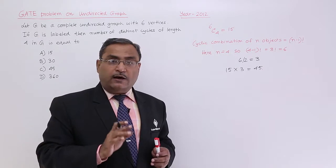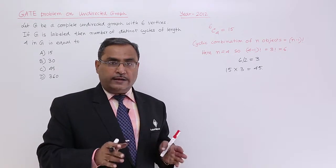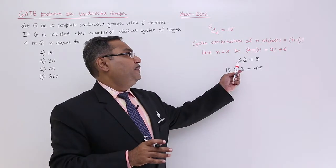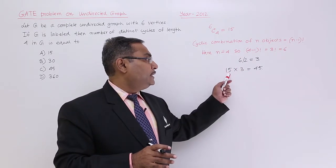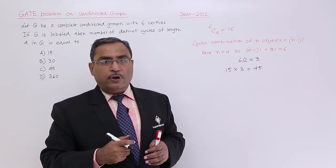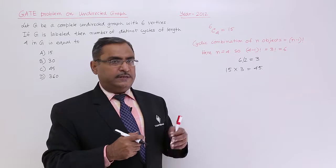But you see here the graph is not directed graph, it is undirected graph, so its ordering is not important. That is why you will be getting 6 by 2 equals 3, and now we will be having this 15 number of ways in which 4 vertices can be selected from 6 vertices.